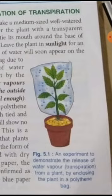This shows that water is lost by the plant in the form of water vapor. In setup B where only the transparent polythene is taken without the plant, you will find that there are no droplets of water inside the transparent polythene. This shows the plant is transpiring.